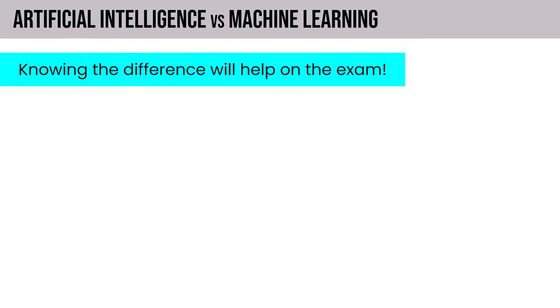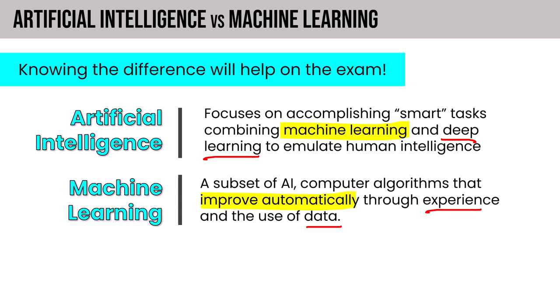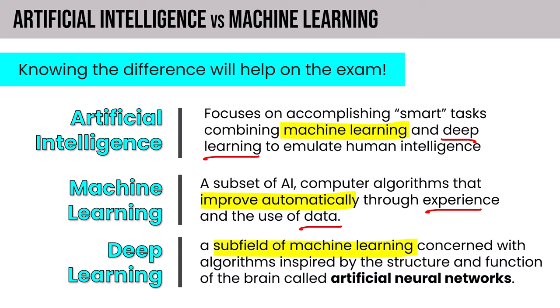Knowing the difference between AI, machine learning, and deep learning can help on any security exam. Artificial intelligence focuses on accomplishing smart tasks, combining machine learning and deep learning to emulate human intelligence. Machine learning is a subset of AI using computer algorithms that improve automatically through experience and the use of data — algorithms learn by being fed data to process. Deep learning is a subfield of machine learning concerned with algorithms inspired by the structure and function of the human brain, called artificial neural networks. In cybersecurity, data science, AI, and machine learning go hand-in-hand.